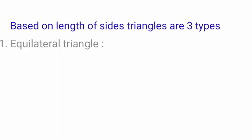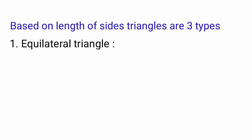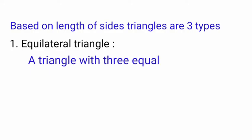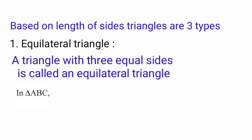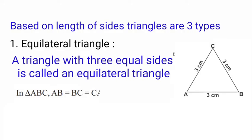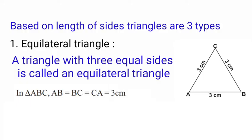First type: equilateral triangle. A triangle with three equal sides is called an equilateral triangle. Observe the figure — in triangle ABC, the side AB equals BC equals CA, which is equal to 3 centimeters.